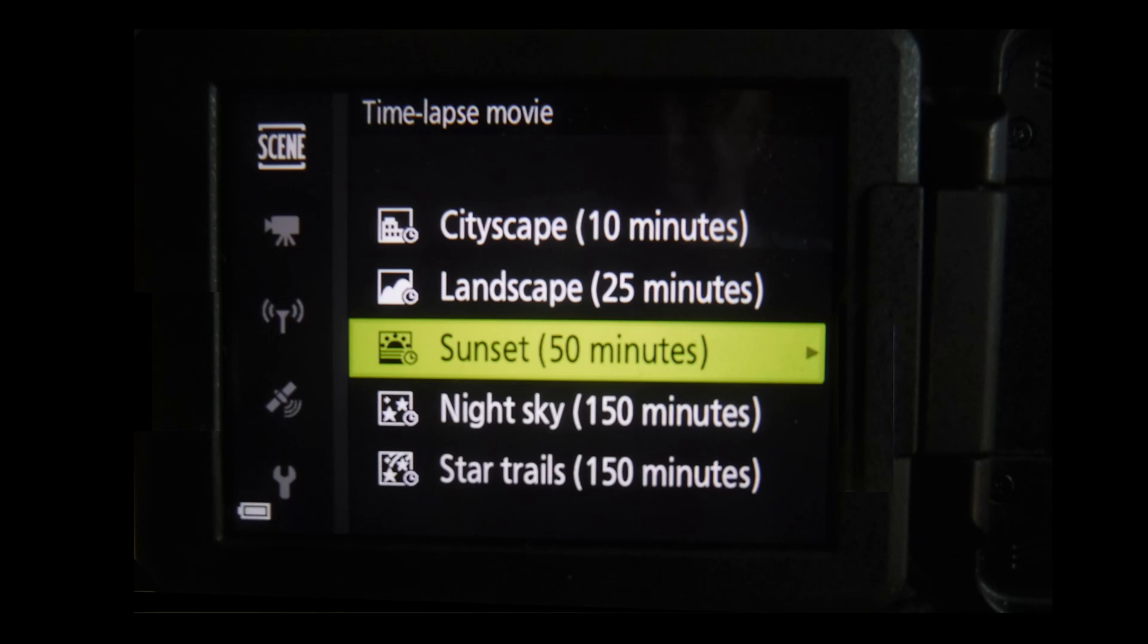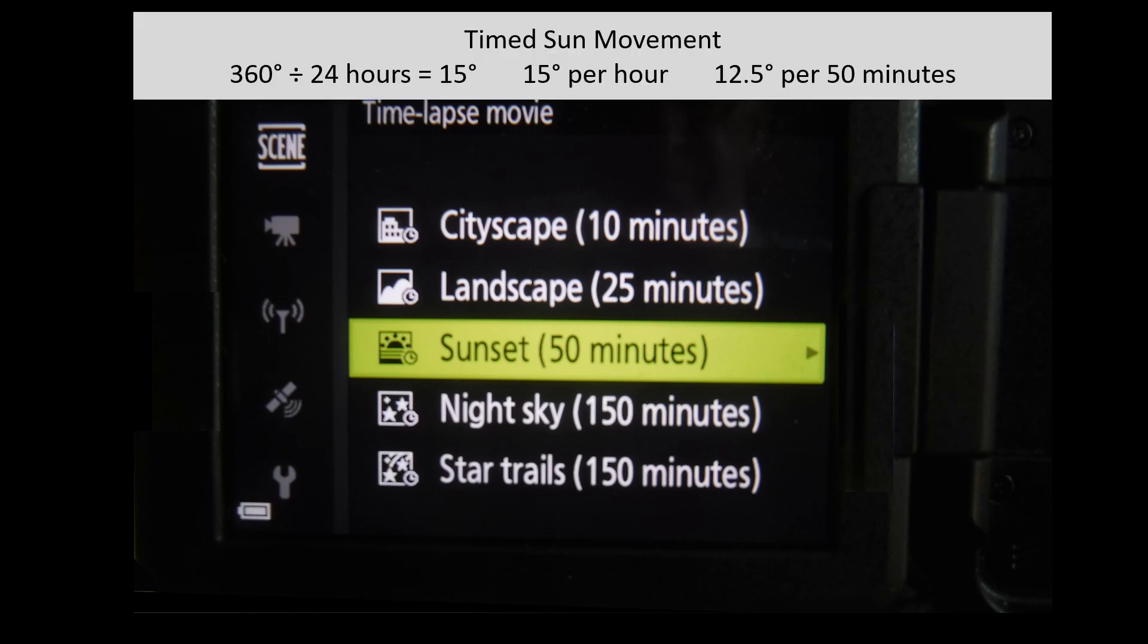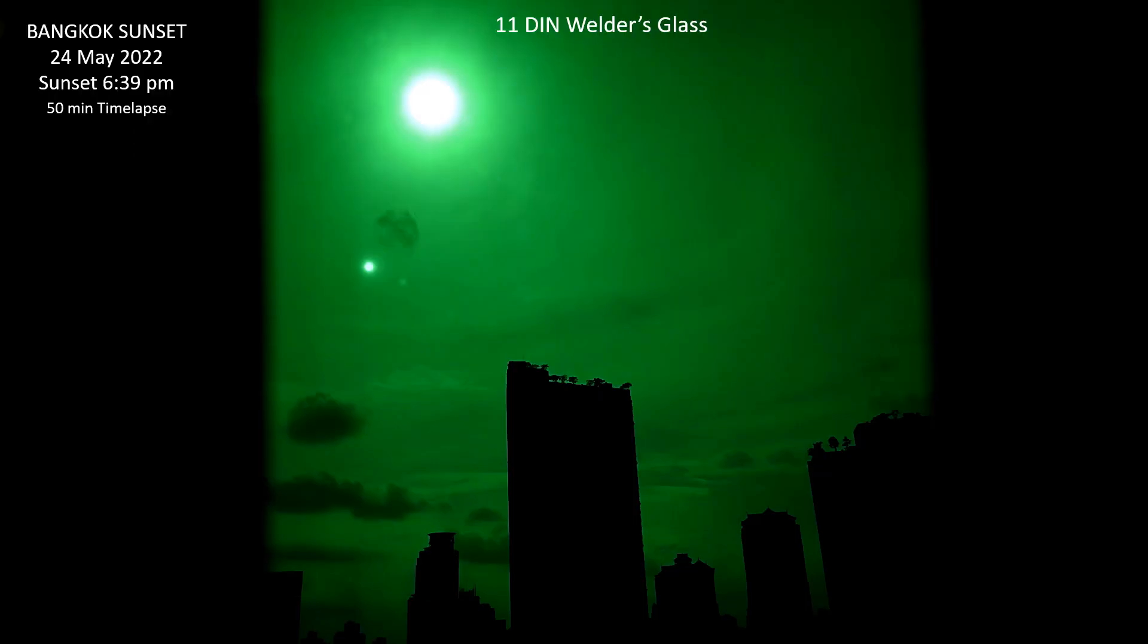So in this case it takes a series of photographs for 50 minutes and then it converts that into a 10 second video. Now since a complete rotation of the Earth is 360 degrees and there's 24 hours in the day, we know that the Sun moves at 15 degrees per hour and that would be 12.5 degrees per 50 minutes. Now I currently live in Bangkok, Thailand. We're going to start off with a couple of sunsets and I use the Livin Din welder's glass to cut down on the glare but it still allows you to see the buildings in the background for a reference.